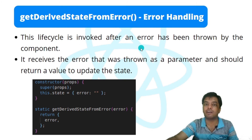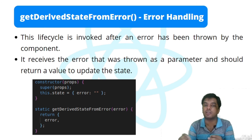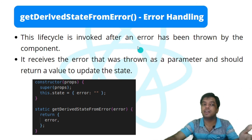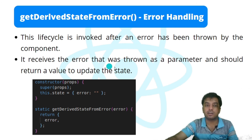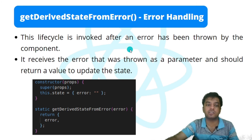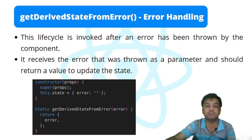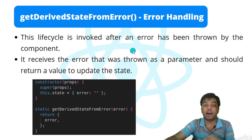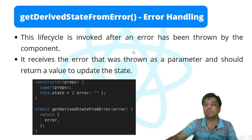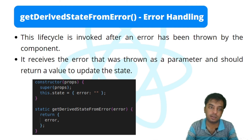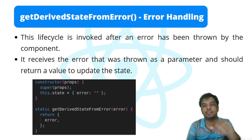Finally, getDerivedStateFromError belongs to the error handling phase. This lifecycle method is invoked after an error has been thrown by a component. It receives the error that was thrown as a parameter and should return a value representing the updated state. So after this method, the state is updated, and since the state changes, the render method will be called again.